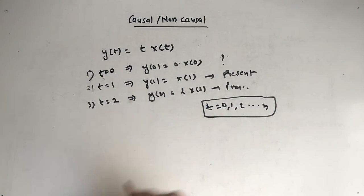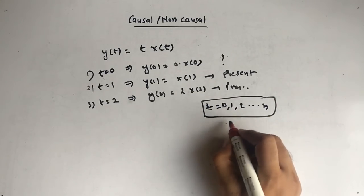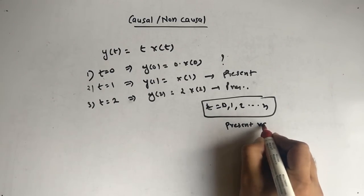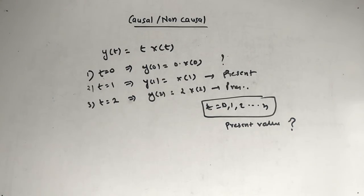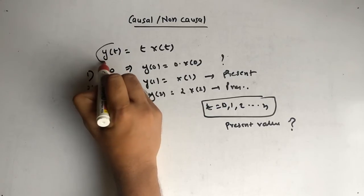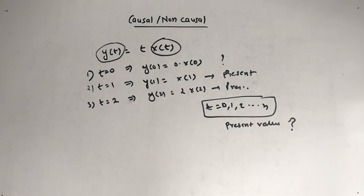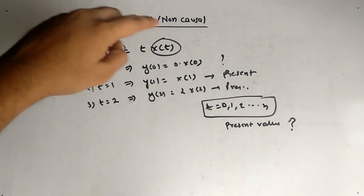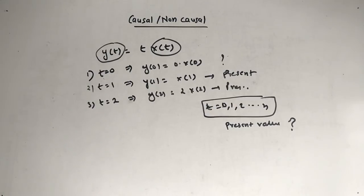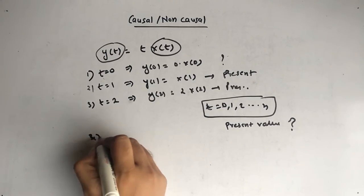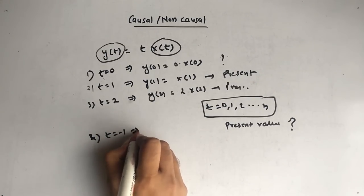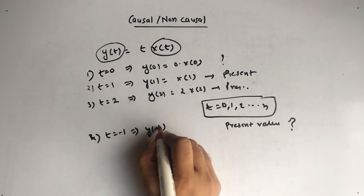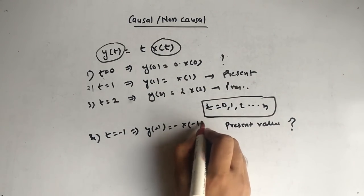Whatever value you put, you will get the same result — always the present value. Why? Because the two functions y(t) and x(t) will never change relative to each other. At t=1 both are 1, at t=2 both are 2. And even if you put negative values, like t=−1, you get −1·x(−1), still present.